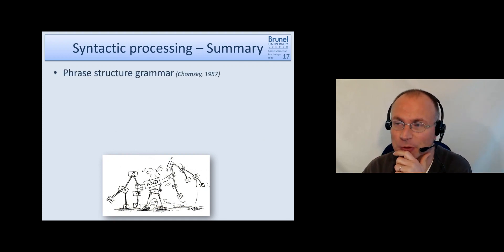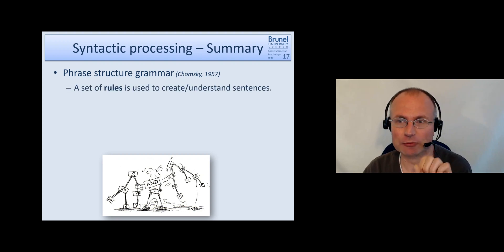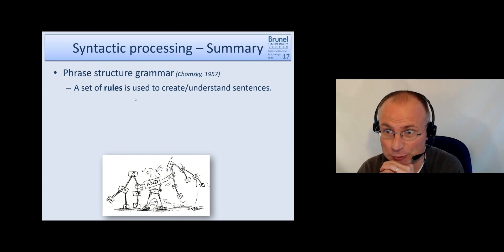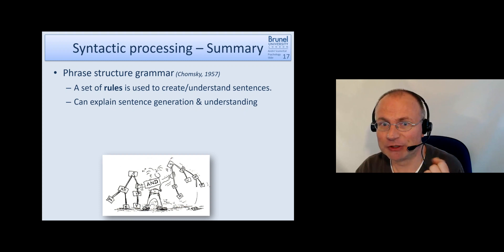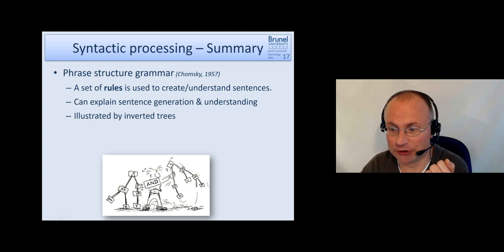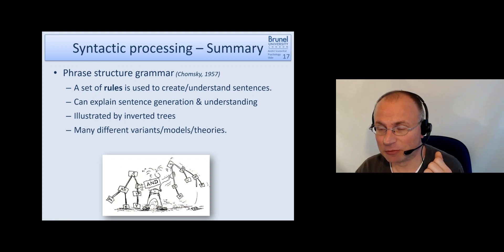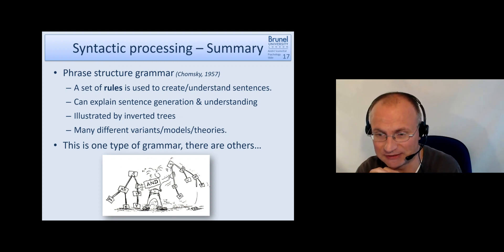To summarize this syntactic processing, we have this phrase structure grammar as suggested by Chomsky, where we have a set of rules to create and understand sentences. This phrase structure grammar can be used to explain how we generate sentences and understand sentences. They are illustrated by these inverted trees as we have seen before. It's important to note that this is only one version. There are loads of different variants and models and theories, and even completely different types of grammar.